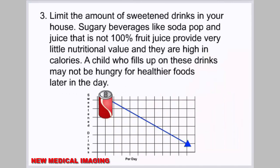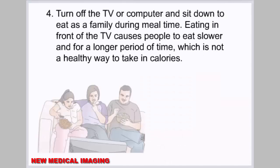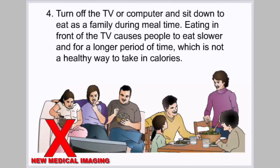Tip 3: Limit sweetened drinks in your house. Sugary beverages like soda pop and juice that is not 100% fruit juice provide very little nutritional value and are high in calories — a child who fills up on these may not be hungry for healthier foods later. Tip 4: Turn off the TV or computer and sit down to eat as a family. Eating in front of the TV causes people to eat for a longer period of time, which is not a healthy way to take in calories.